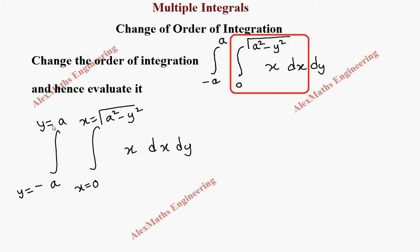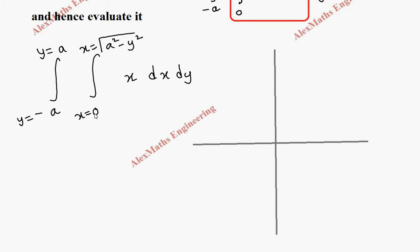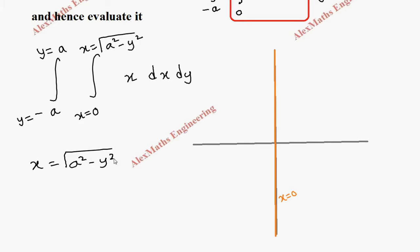And y equals minus a and y equals a. Let's draw the graph — we'll take the horizontal and vertical axis. Here x equals 0 is nothing but the y-axis. Then x equals root of a squared minus y squared — let's rearrange this by squaring both sides: x squared equals a squared minus y squared.